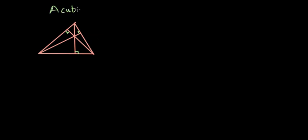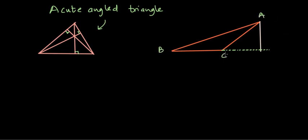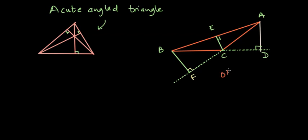What about an obtuse angle triangle, where one of the angles is obtuse? If we have such a triangle, the height can be found by dropping the altitude from a vertex to the opposite side, but we have to extend the side of the triangle at the base. We name this triangle ABC, extend BC to point D, and AD is then the altitude. The remaining altitudes CE and BF can be drawn by extending the opposite sides, and this is how you identify altitudes of an obtuse angle triangle.